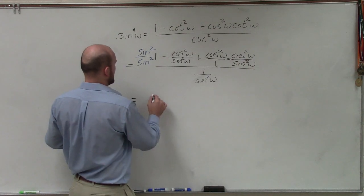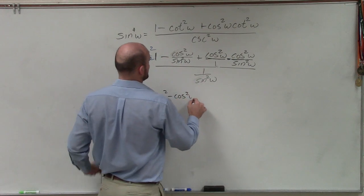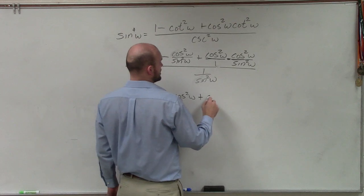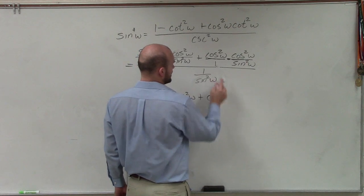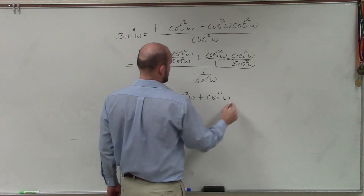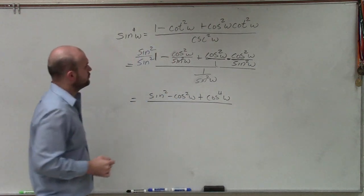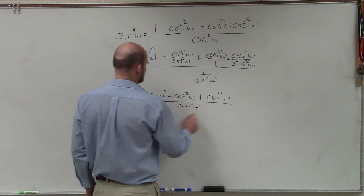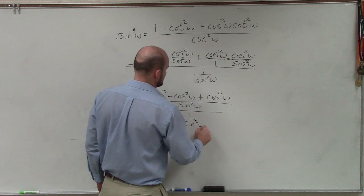So therefore, now up top, I have sine squared minus cosine squared of w plus, now here when you multiply these across, it's just going to become a cosine squared. And then cosine squared times cosine squared is going to be cosine to the fourth w all over sine squared of w divided by 1 over sine squared of w.